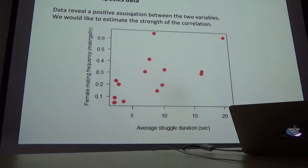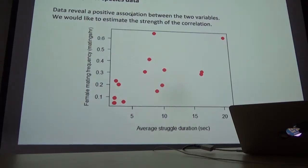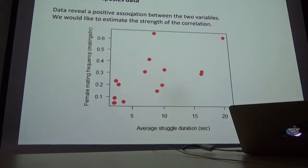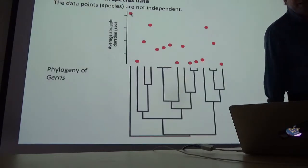Here are 15 species of water striders. The y-axis is female mating frequency — how often do females mate — and along the x-axis is average struggle duration. There seems to be a correlation between these variables, from which we might draw some conclusions about how one variable might affect the evolution of the other. How strong is this correlation? Is the correlation real? How do we approach that problem when species are data points?